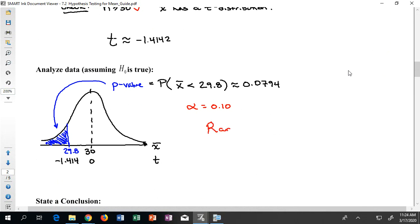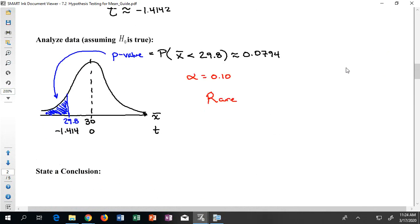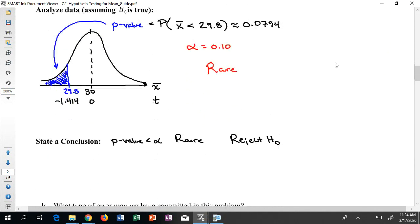So I would definitely say here, we did see a rare x bar. So my p value was less than my alpha. So I got something that was rare. And when I get something that's rare, I don't think that H0 seems like a great fit anymore. And I'm going to reject it.